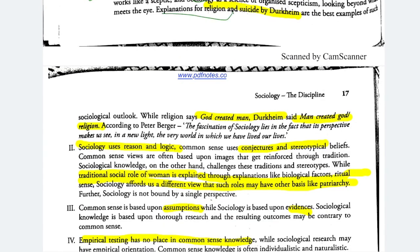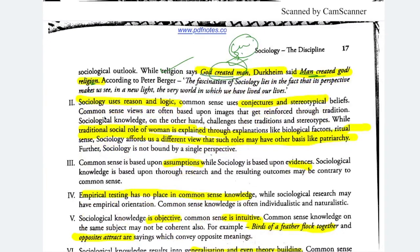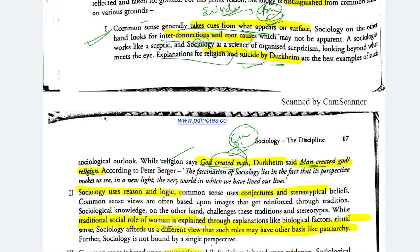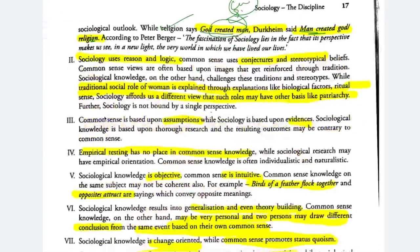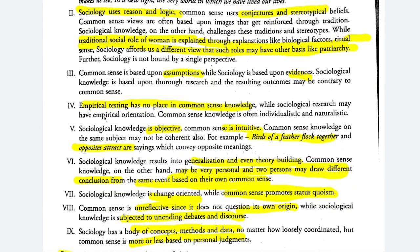Durkheim's explanation of religion and suicide is an example. Religion — and common sense — says God created man, and stops there. But after scientific study, Durkheim argued man created God, because religion is basically an institution created by society to achieve unity. If people feel society is disintegrating, they create religion to hold it together — increasing solidarity. That is sociology's deeper interconnection versus common sense knowledge.